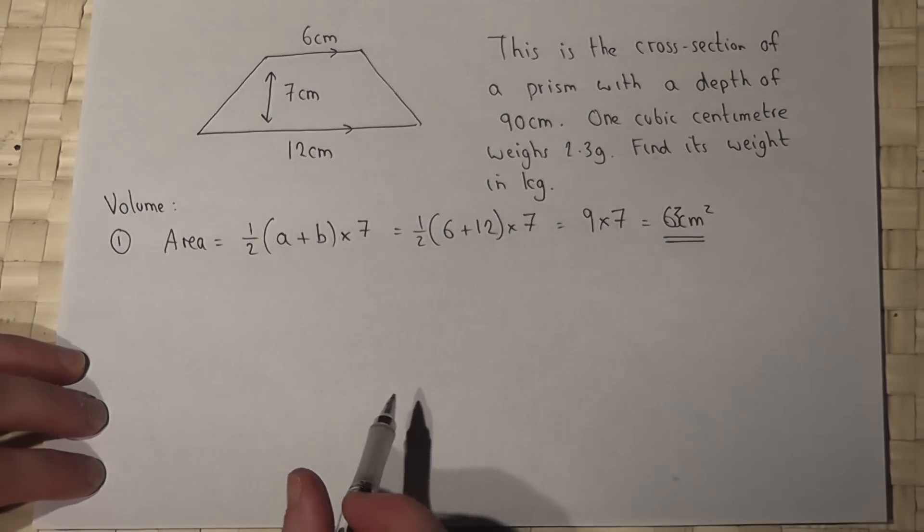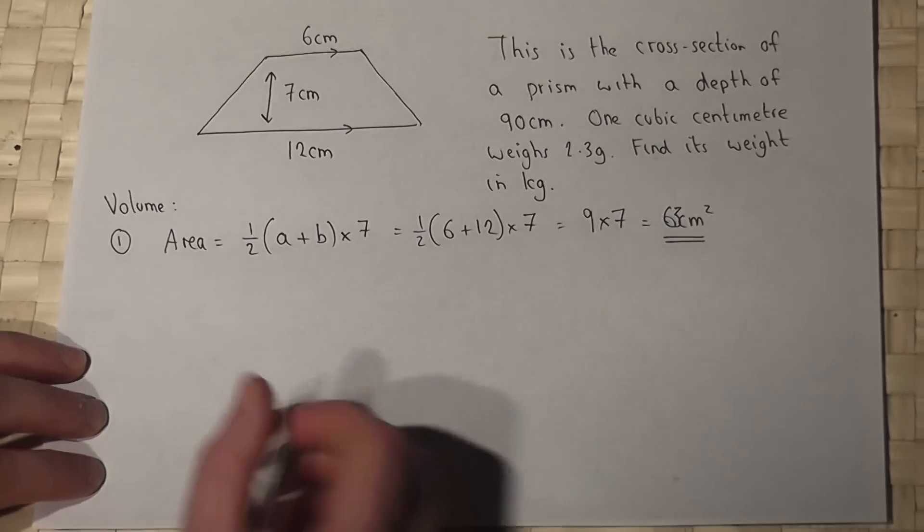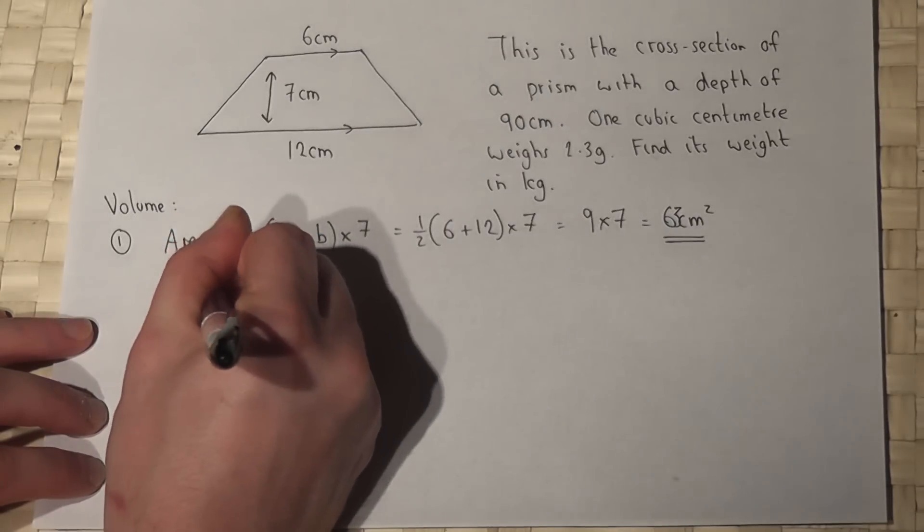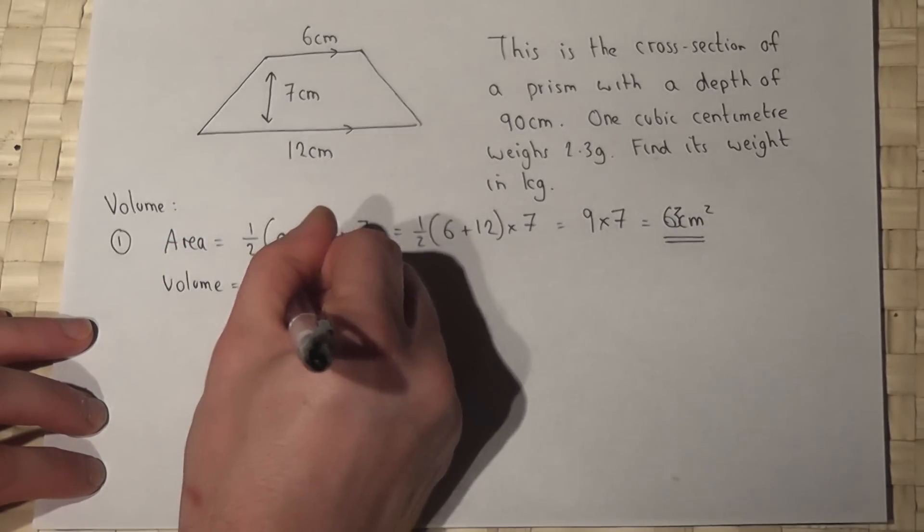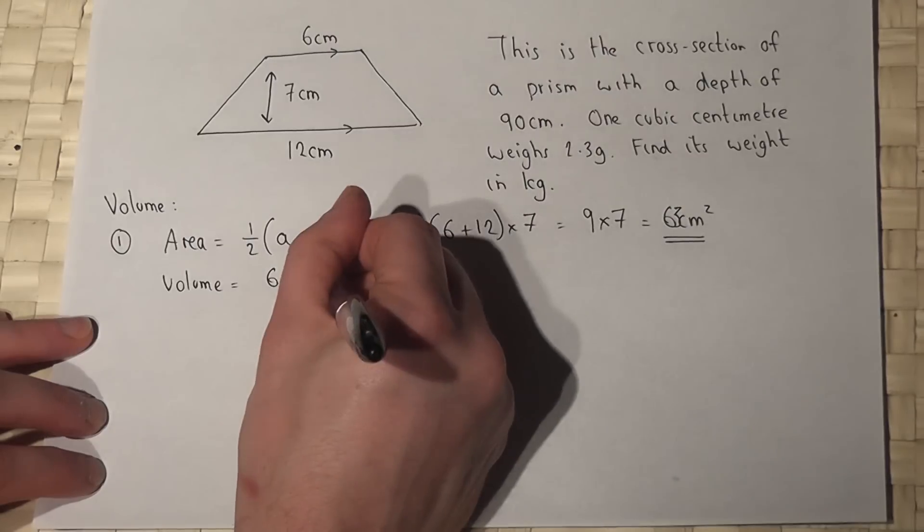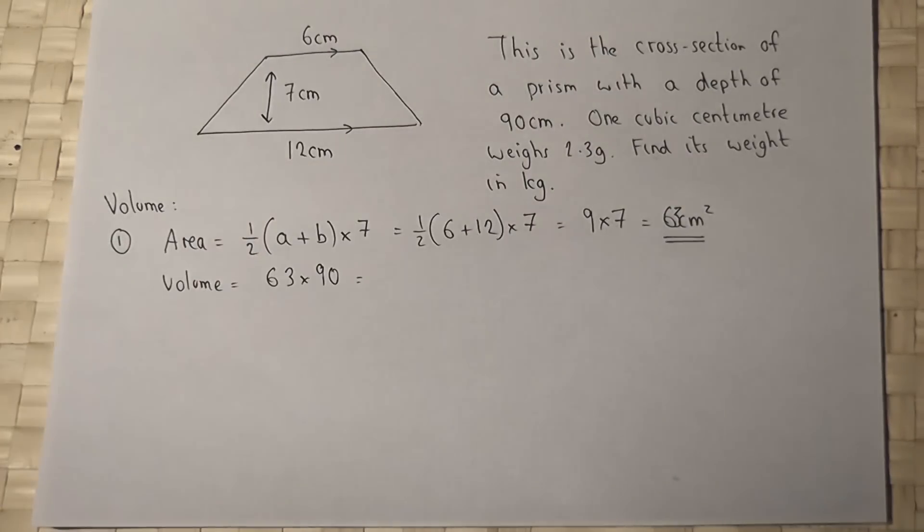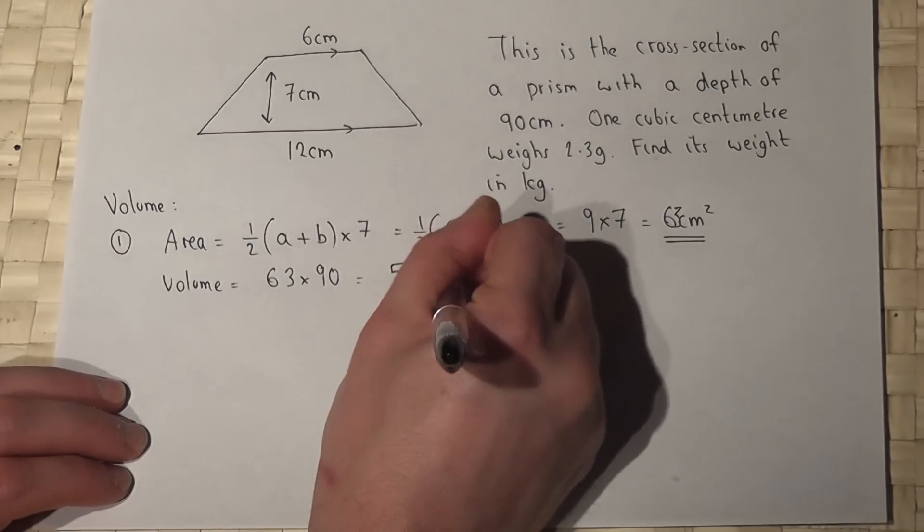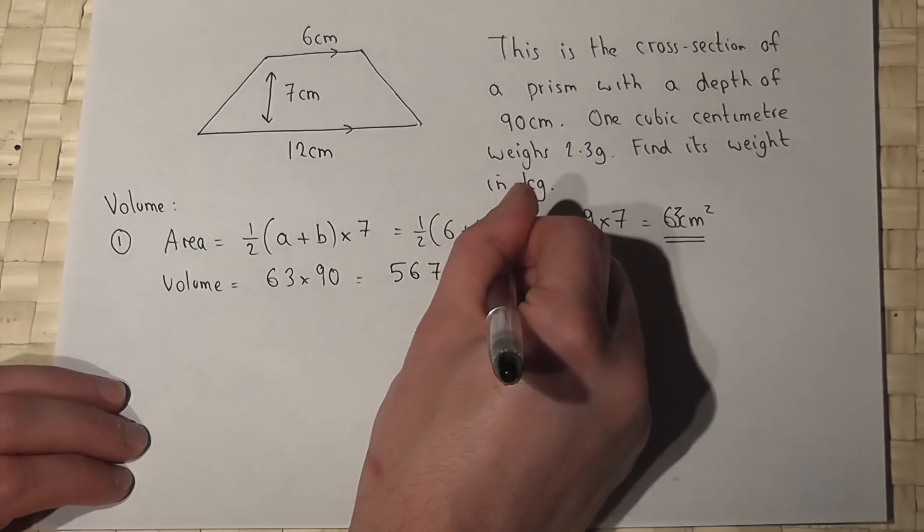That's the area of the face, so its volume will be this area times by the depth which is 90. So 63 times 90 is 5670 centimeters cubed.